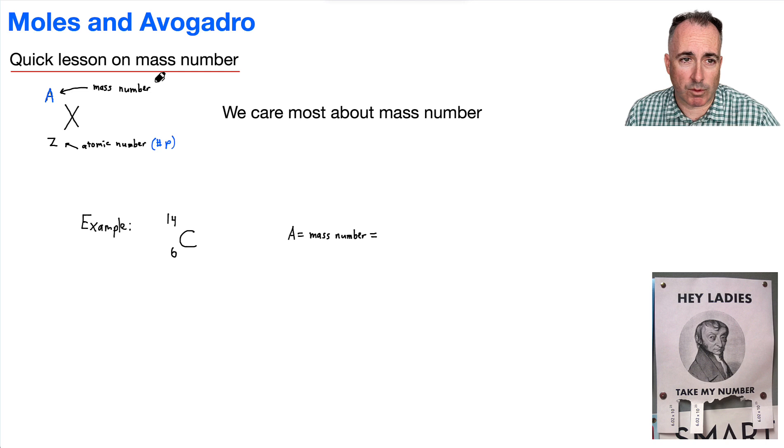Now mass number, what is that? That's the number of nucleons, which is technically the protons plus the neutrons. So this is the number of protons plus neutrons. That's called the mass number. And that can be different. So this one here can vary. For example, you can have a mass number like carbon-14. You can also have carbon-12. So this top number here can vary.